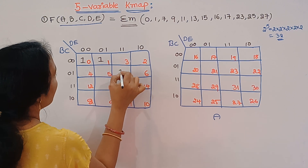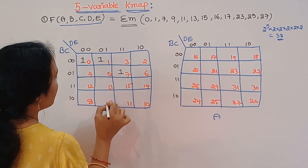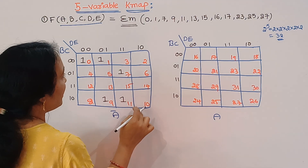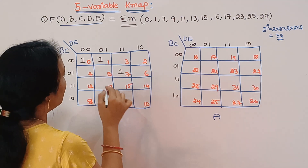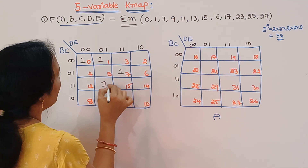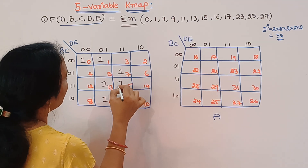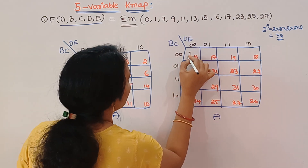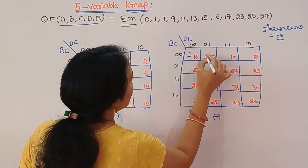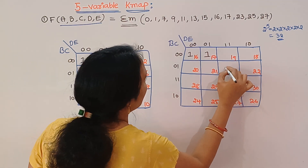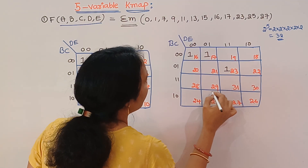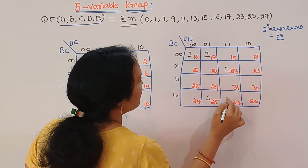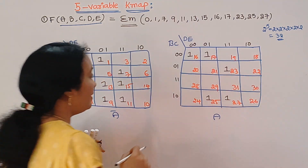Now inserting 1s: place 1s at positions 0, 7, 9, 11, 13, 15, 16, 17, 23, 25, and 27. That is the first problem for this 5-variable KMAP in SOP form. We are working with 2 to the power of 5, checking 32 ones total.